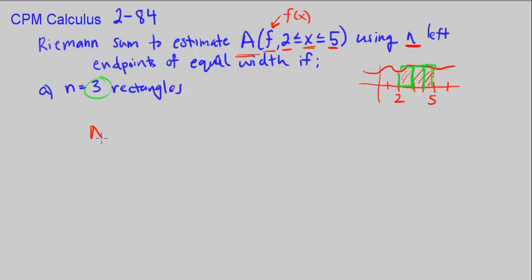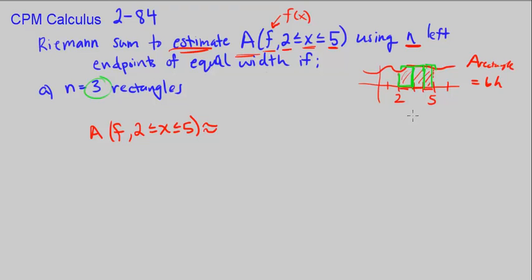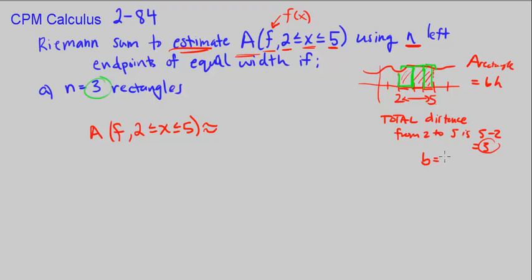To write this down, we say the area of our function bounded by our x-axis between 2 and 5 is approximately — we use the squiggly approximation sign, not the equal sign. The area of a rectangle is base times height. The total distance from 2 to 5 is 5 minus 2, which is 3. If we break those 3 units into 3 rectangles, each one has a base of 1. So from 2 to 3, from 3 to 4, from 4 to 5.